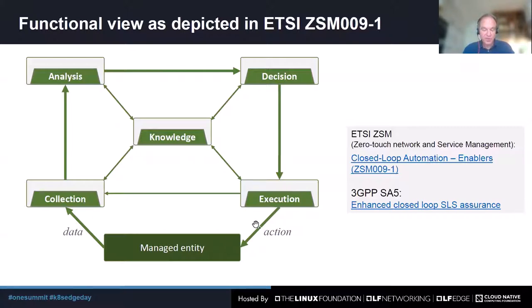The outcome from the execution is assessed after new data is collected and the gap between the current and expected states is evaluated again. The knowledge in the closed loop has the main purpose of storing and retrieving data, including context and experiences that can be shared between the different stages as well as between different closed loops. Knowledge can also be used as a means for feedback signaling between the closed loop stages.